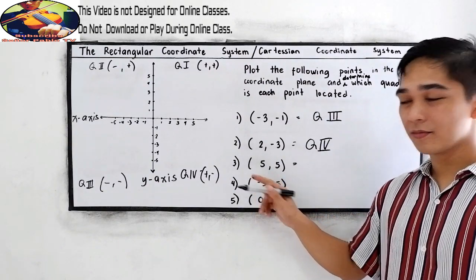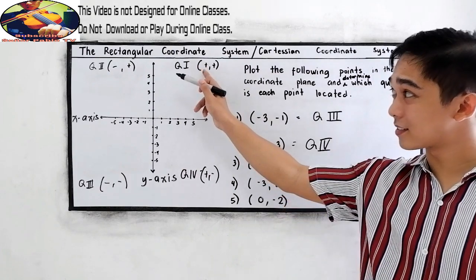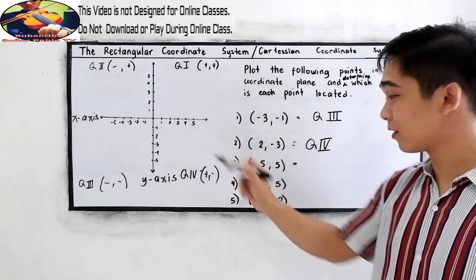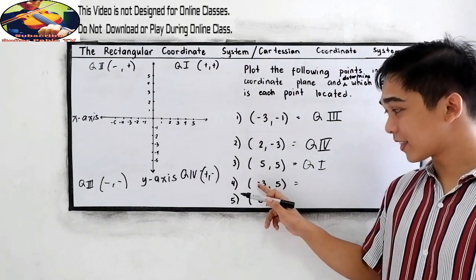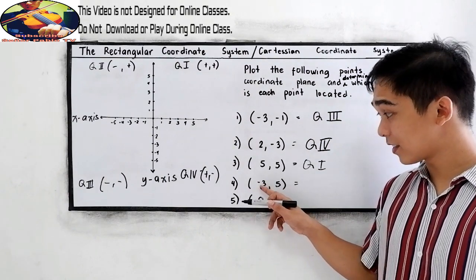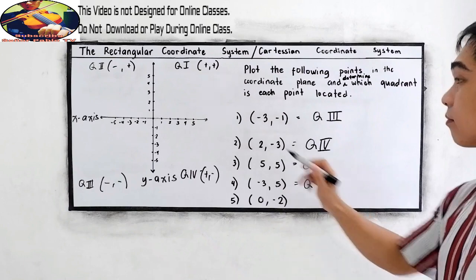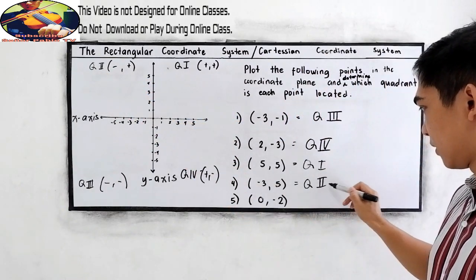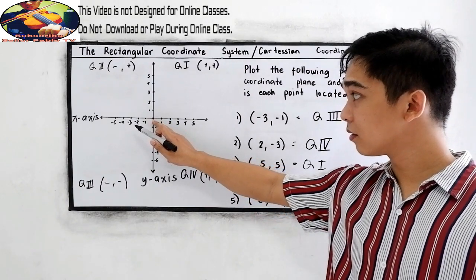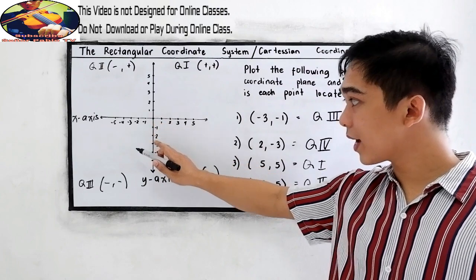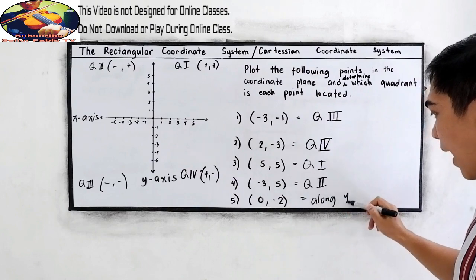Number 3: (5, 5) — positive and positive, therefore in Quadrant 1. Number 4: (negative 3, positive 5) — negative and positive, so that is Quadrant 2. And lastly, (0, negative 3) — starting from our origin going to negative 3, so it is along the y-axis.